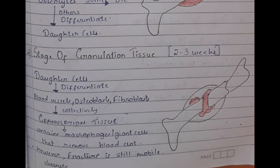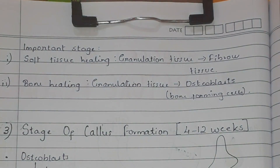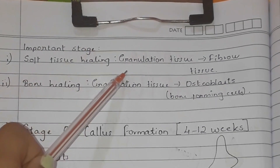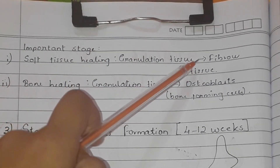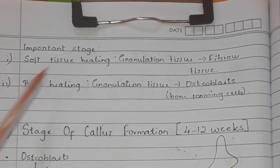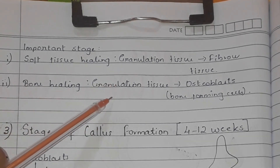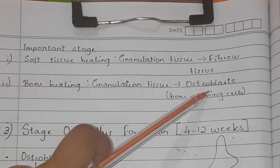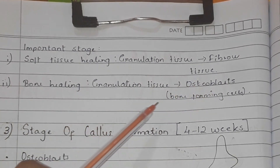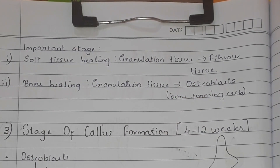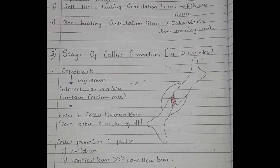An important distinction: in soft tissue healing, the granulation tissue forms fibrous tissue, whereas in bone healing — in case of bone fractures — the granulation tissue forms osteoblasts. These osteoblasts are the bone-forming cells.